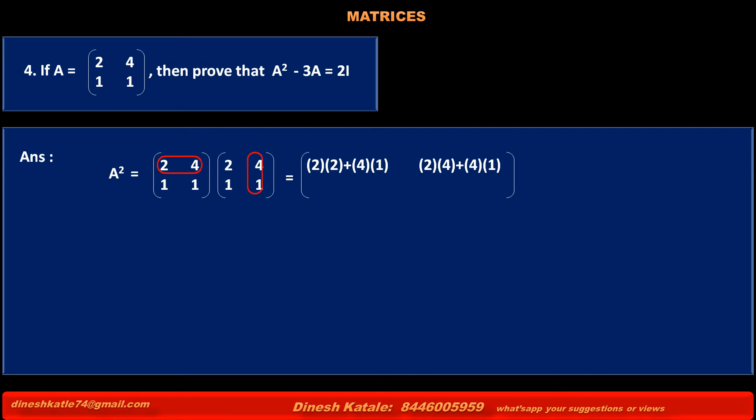Second row of matrix A into first column of the same matrix A. That is (1)(2) + (1)(1). Second row of matrix A into second column of matrix A. That is (1)(4) + (1)(1).